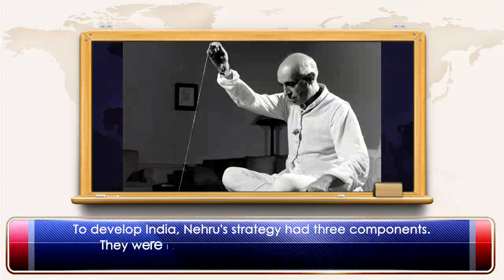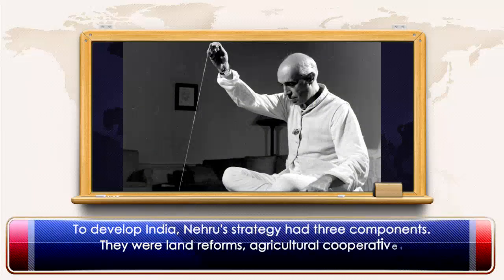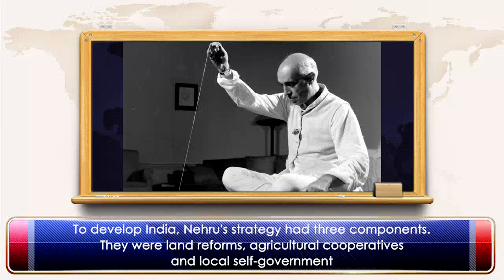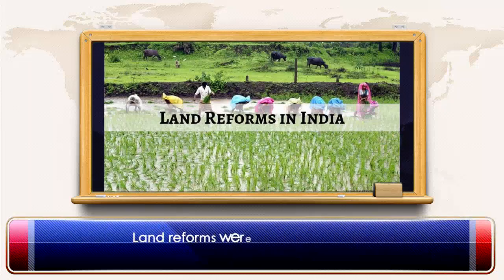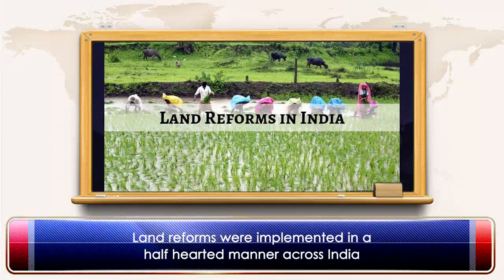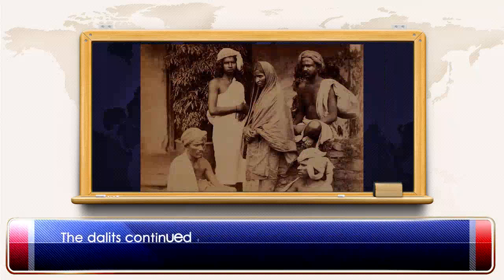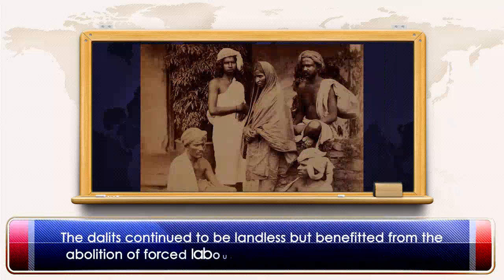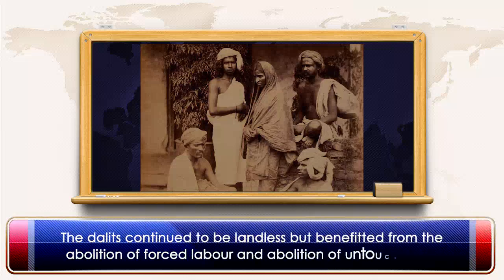To develop India, Nehru's strategy had three components: land reforms, agricultural cooperatives, and local self-government. Land reforms were implemented in a half-hearted manner across India. The Dalits continued to be landless but benefited from the abolition of forced labour and abolition of untouchability.